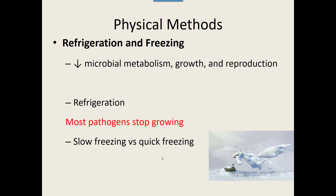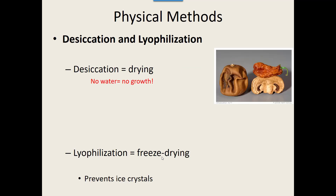Away from temperature altogether — what about the presence or absence of water? Desiccation, which means drying, is a sure way to stop or slow microbial growth. If we remove the water, there's no growth. This is why many specimens, fruits, and vegetables that need to be maintained for long periods are dried out. A dried piece of fruit lasts much longer than a fresh one because microorganisms can't survive without water either. Remove the water, and it kills the microorganisms.